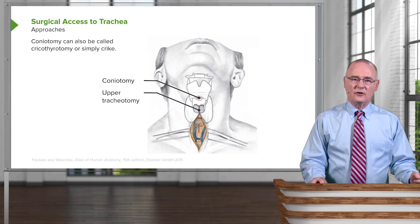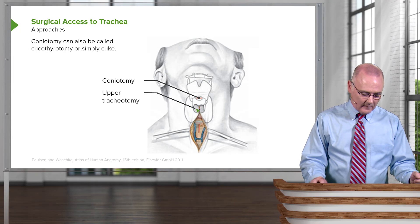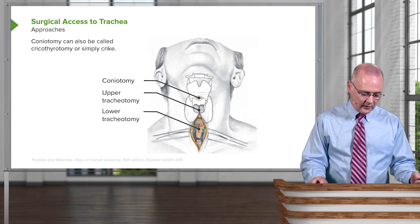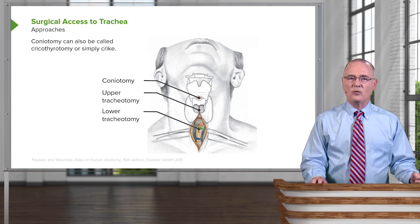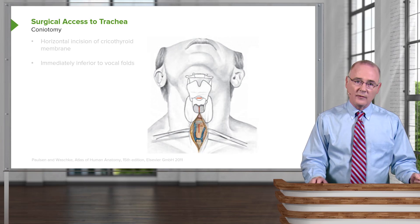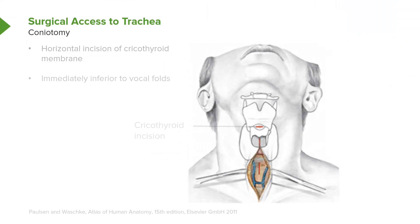Another approach is to perform an upper tracheotomy, which would be in this region here. And then the third approach would be to do a lower tracheotomy, shown in this region here. Beginning with the coniotomy or simply the cric, the relevant anatomy is the area between the inferior portion of the thyroid cartilage of the larynx and the cricoid cartilage, which is inferior to the thyroid cartilage, along its superior border.